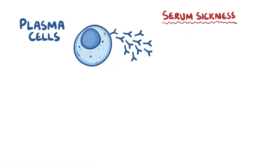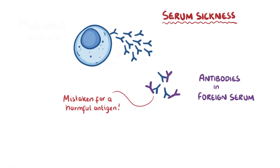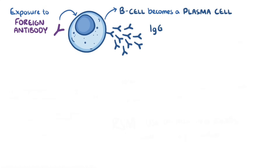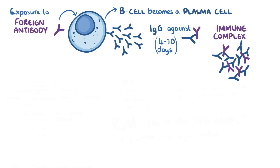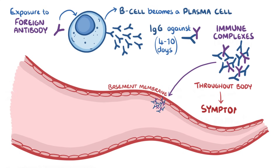In serum sickness, however, plasma cells start producing IgG antibodies in response to the antibodies in the foreign serum, which get mistaken for harmful antigens. This process starts with the initial exposure to the foreign antibodies, which triggers B cells to become plasma cells and produce IgG antibodies against them — a process that usually takes about 4 to 10 days. If there are still foreign antibodies around, the IgG will bind to them and form immune complexes. Since multiple IgGs can bind to the same antigen, we end up with large immune complexes that get deposited in the basement membrane of blood vessels.